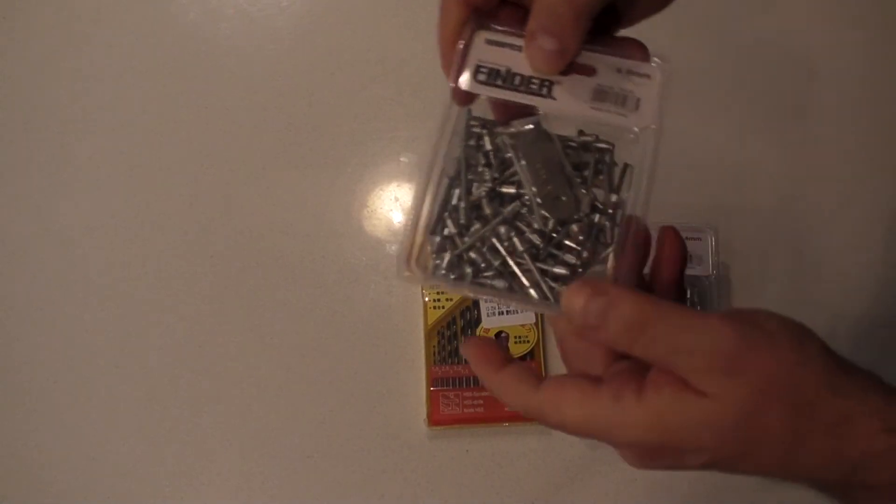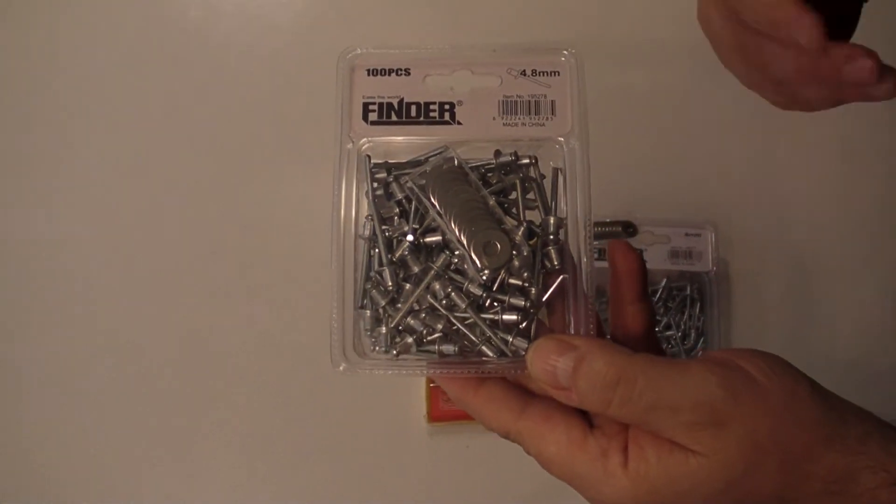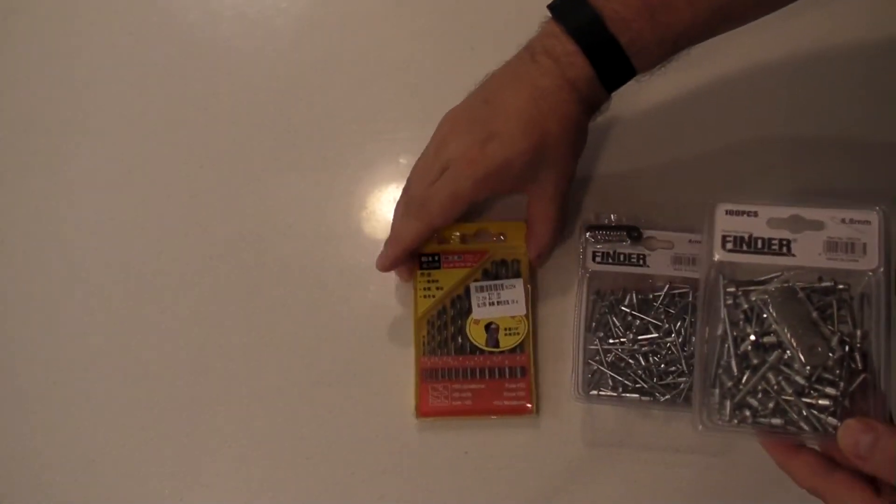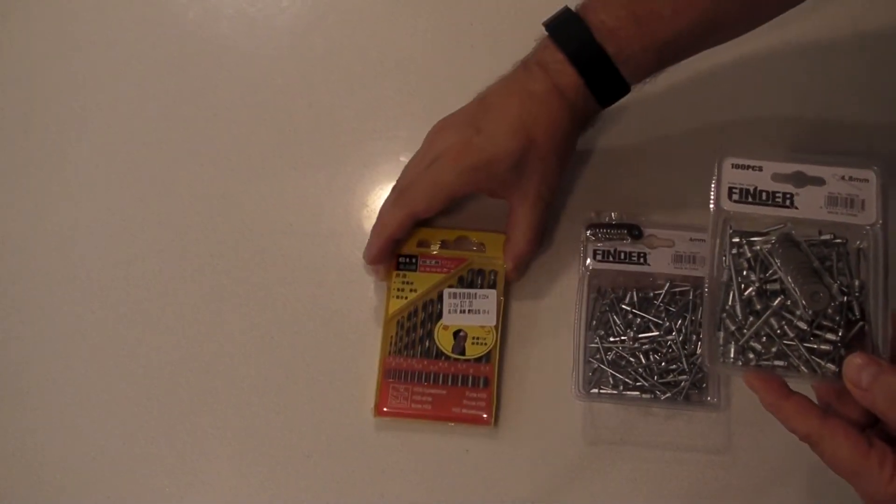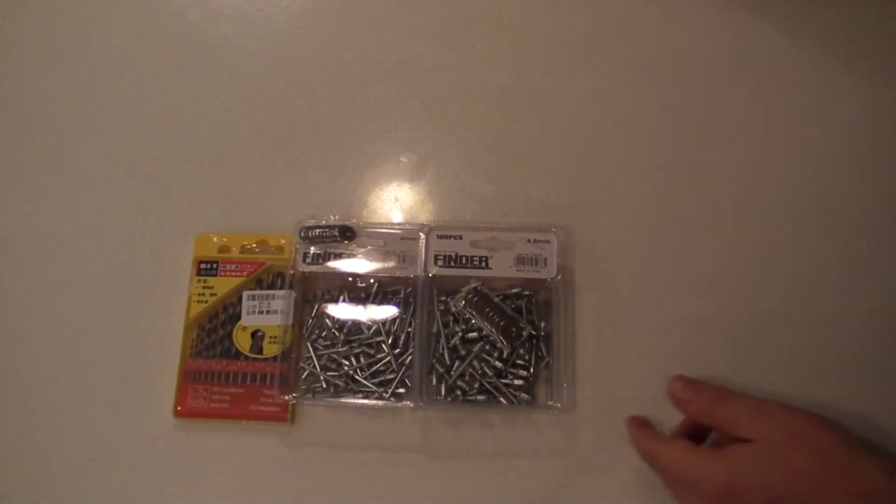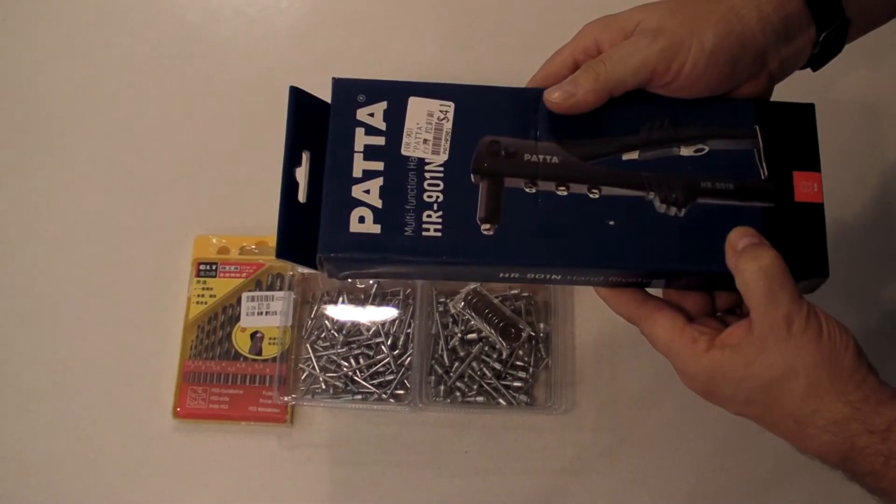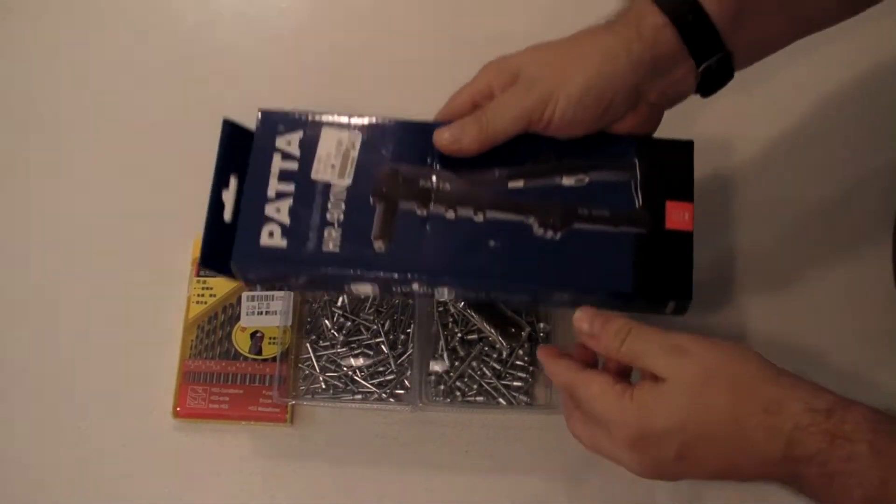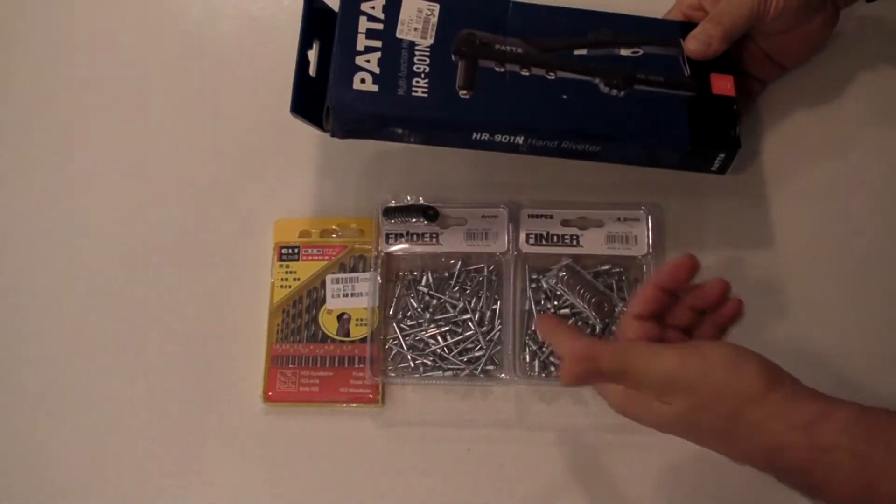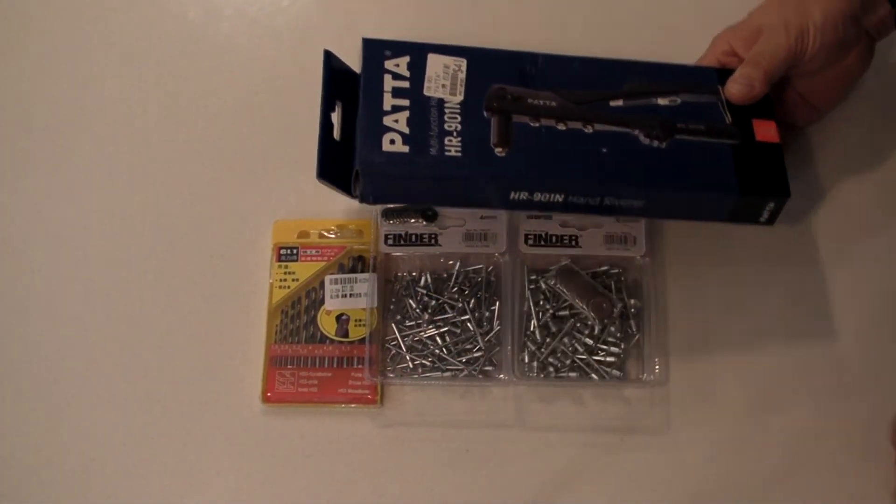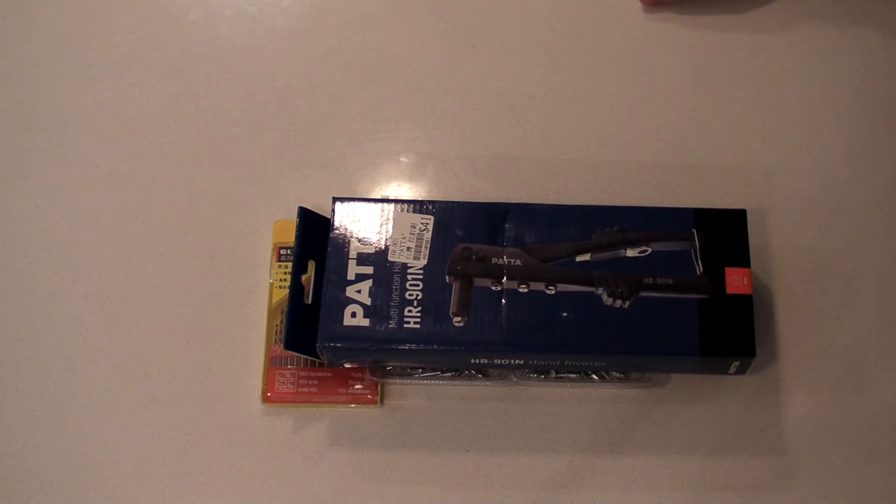I got some larger pop rivets, these are 4.8 millimeters. I'll probably use the 4.8 millimeter drill bit for that, and I also got the hand riveter that you use to put these in place. So I'll be showing you how to use this device. Now that I have a drill, drill bits, and pop rivets, the only thing that's missing is the sheet metal I need to purchase.